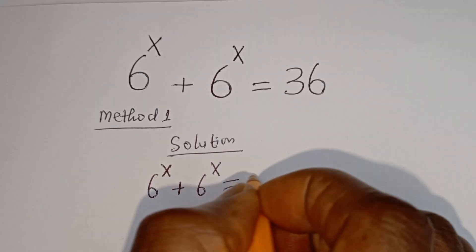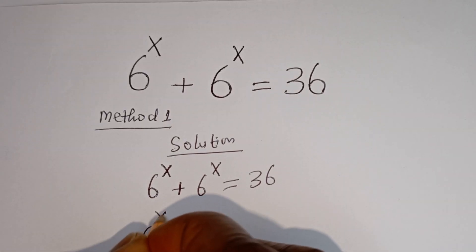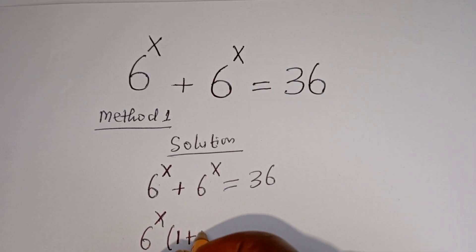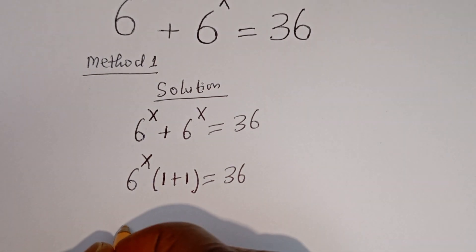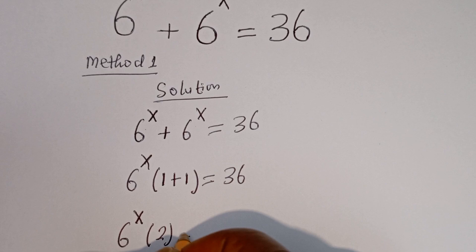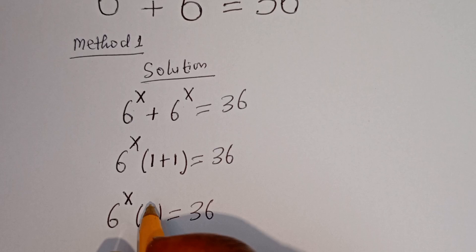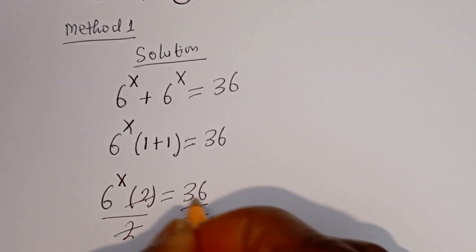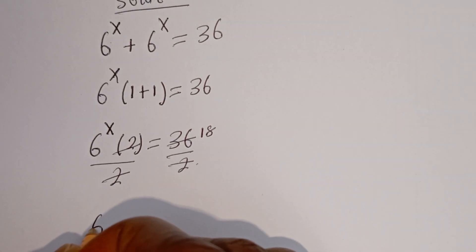We have 6 to the power of x plus 6 to the power of x is equal to 36. Since 6 to the power of x is common, let's factor it out. We have 6 to the power of x, bracket 1 plus 1, which is 2, equal to 36. Now let's divide both sides by 2: we get 6 to the power of x equals 18.